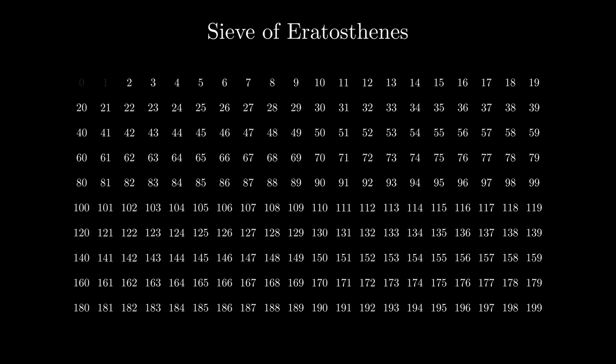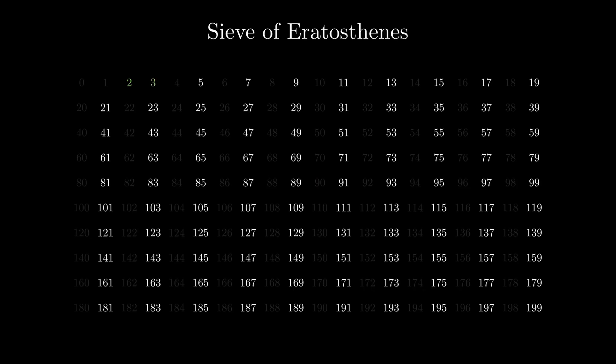So, in the beginning we can have all the numbers up to n marked as possibly prime. After that we can remove all the multiples of 2 and mark 2 as definitely prime. Then we can remove all the multiples of 3 and mark 3 as definitely prime.